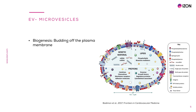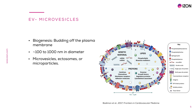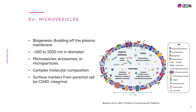Microvesicles are shed under normal conditions and their release increases with various stimuli and pathological settings. Microvesicles fall in a diverse range of sizes from 100 to 1000 nanometers in diameter and they may also be called ectosomes or microparticles. Microvesicles can package an array of distinct biomolecules like lipids, genetic material, and proteins such as transcription factors, cytokines and growth factors. Markers for microvesicles include surface molecules from parental cells and integrins or CD40, among others.